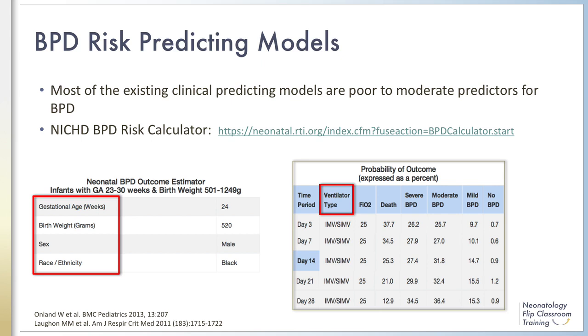This risk increases to 27% if he is intubated on 25% oxygen on day 14 of life, and increases further to 36% by 28 days of life.